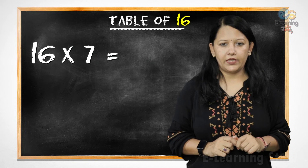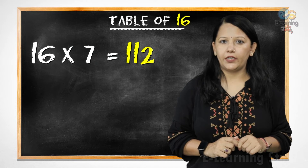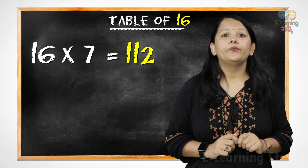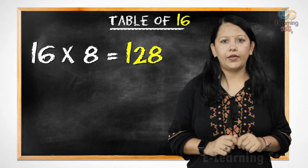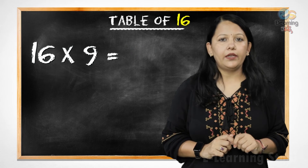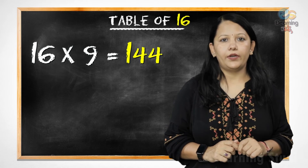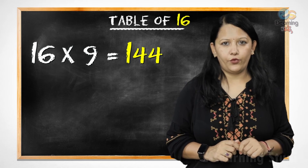16 7s are 112, 16 8s are 128, 16 9s are 144.